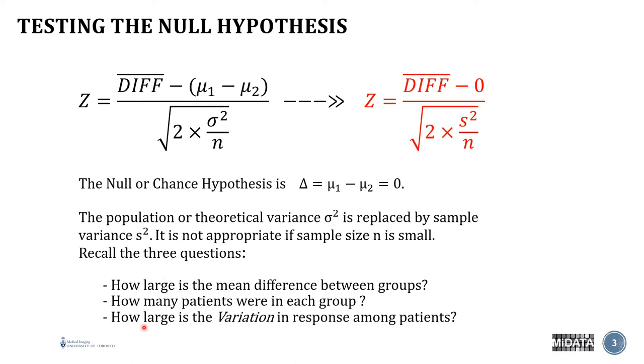When we ask how large is the variation in response among patients, the larger this variation, the larger this term, and therefore the more your noise, which is not a good thing. What you want to do is maximize your signal while minimizing this term, which is by making or by hoping for a smaller variation in response among your patients and using as large a sample size as possible.